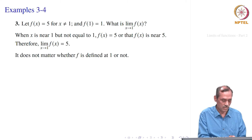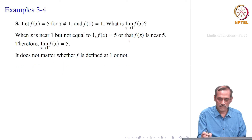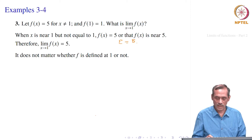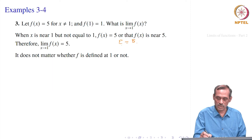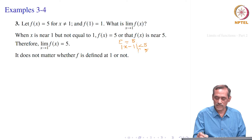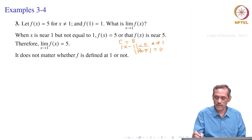Now formally, how do you do that? All that you have to do is choose delta equal to epsilon here. Suppose epsilon greater than 0 is given — choosing delta equal to epsilon. Suppose we take |x minus 1| less than delta. When you take f of x, it will be 5 anyway. So |f(x) minus 5| equals 0, because f(x) equals 5 and x is not equal to 1 here. Anyway, this is less than your epsilon.